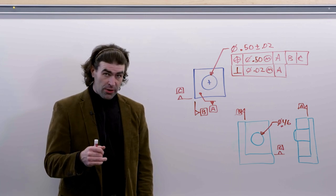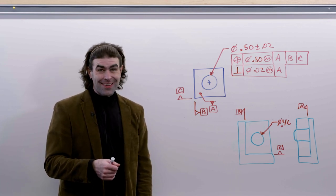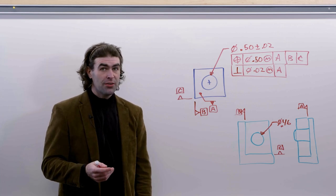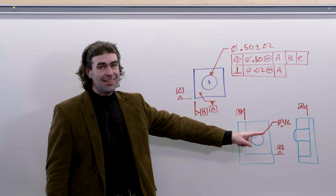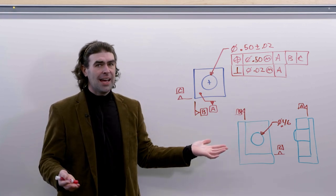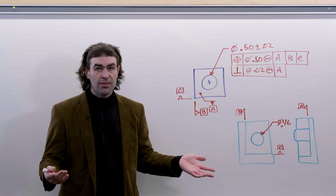If we do the same calculation we did before for the virtual condition, we're going to find out that we would have a virtual condition of negative twenty thousandths. So if we try to make a gauge, it's just not going to work. You can't have a pin with a diameter of negative twenty thousandths.